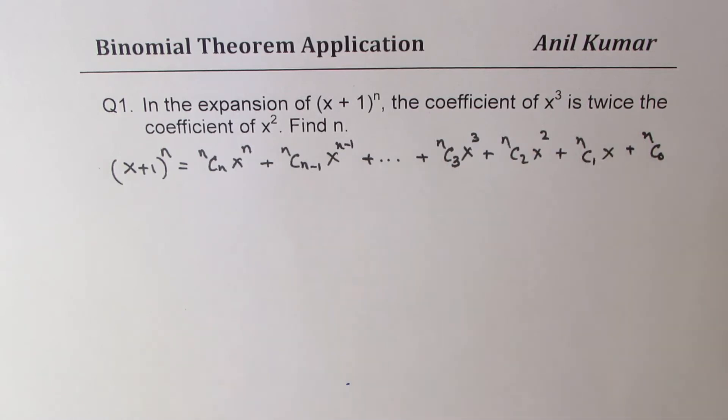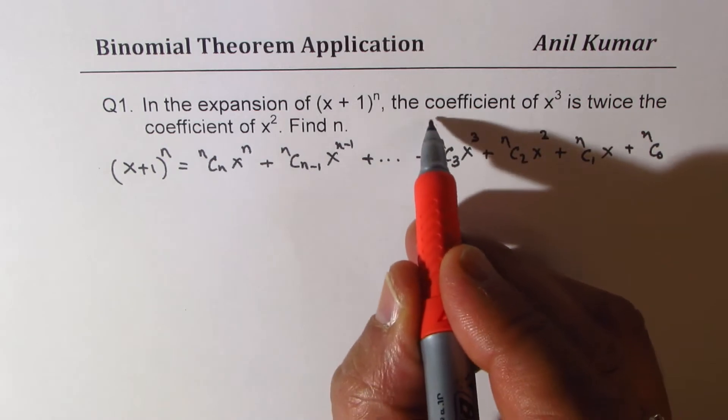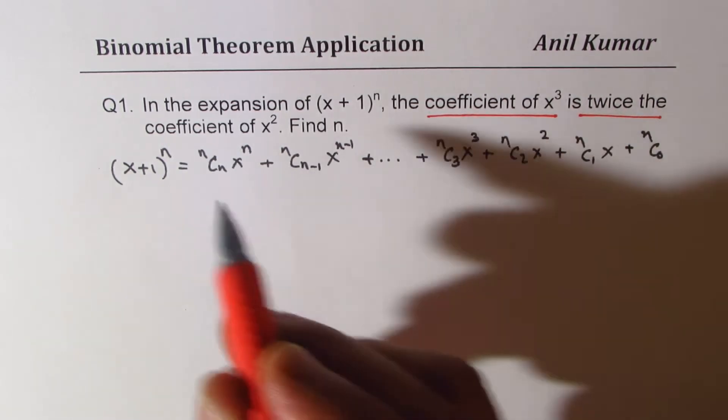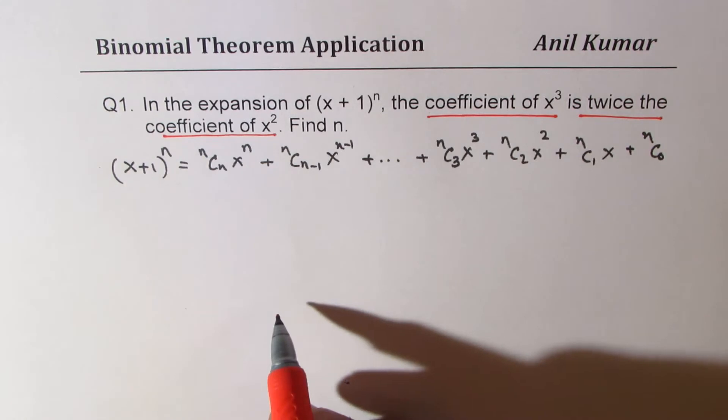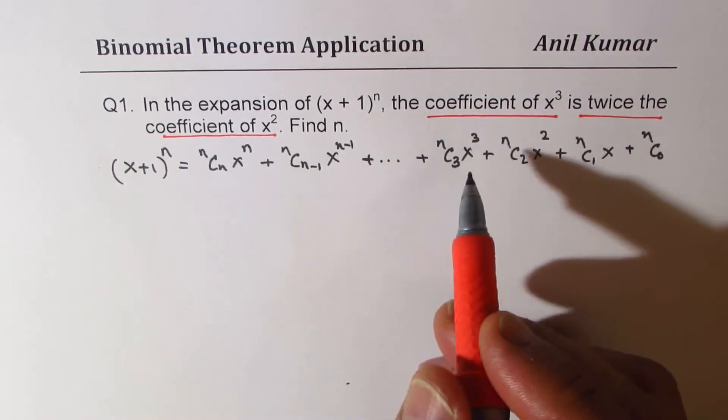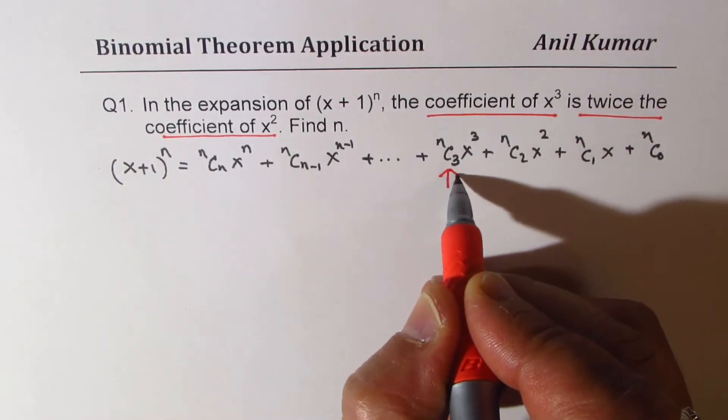Now, what is given to us is the condition that the coefficient of x³ is twice the coefficient of x². What is the coefficient of x³? It's nC3.